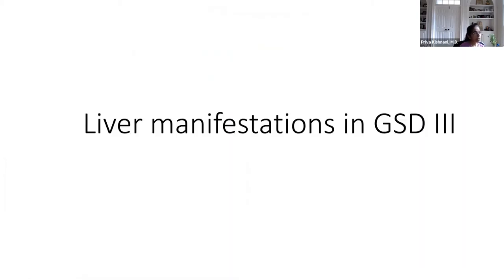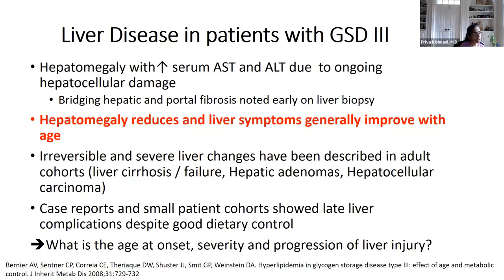Returning to liver manifestations: patients have increased liver size and enzymes, which improve with age through dietary interventions reducing hypoglycemia episodes. However, what has been overlooked is microscopic liver scar tissue, noted early on liver biopsy. In some instances, there can be irreversible severe liver changes including cirrhosis, liver adenomas, and liver carcinoma. A decrease in liver size does not necessarily mean improvement in liver status — similar to alcoholic liver disease, it can go silent for many years before unmasking.